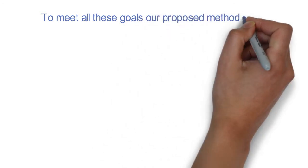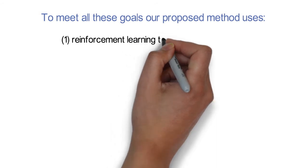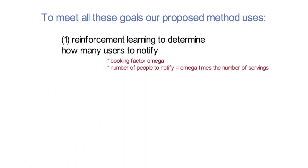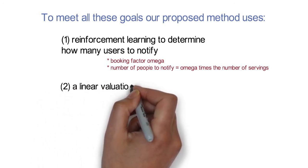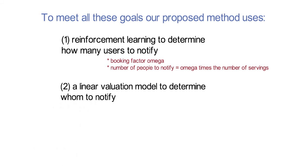To meet all these goals, our proposed method actually uses two techniques. We use reinforcement learning to determine how many users to notify. This is done by a booking factor, omega, and then we notify omega times the number of servings. And also through a linear variation model to determine whom to notify.